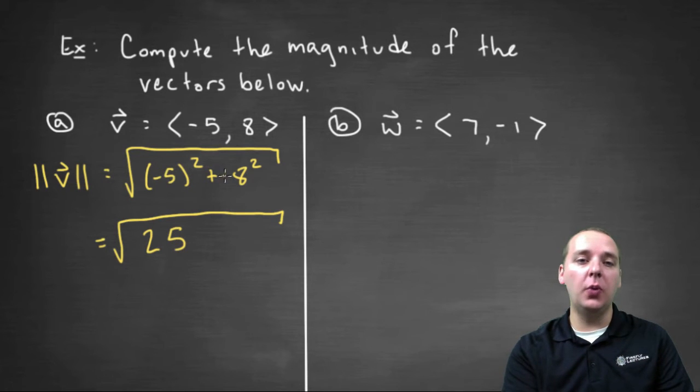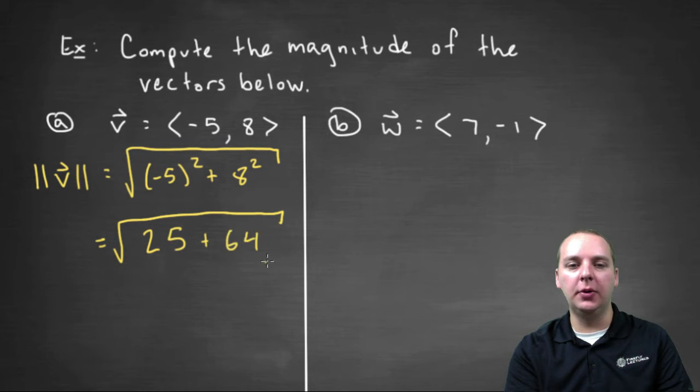Also don't forget to square the negative five and the eight, it's not just negative five plus eight. We actually have to square these quantities here. So we'll have big square root of twenty-five plus sixty-four, which will be the square root of eighty-nine.